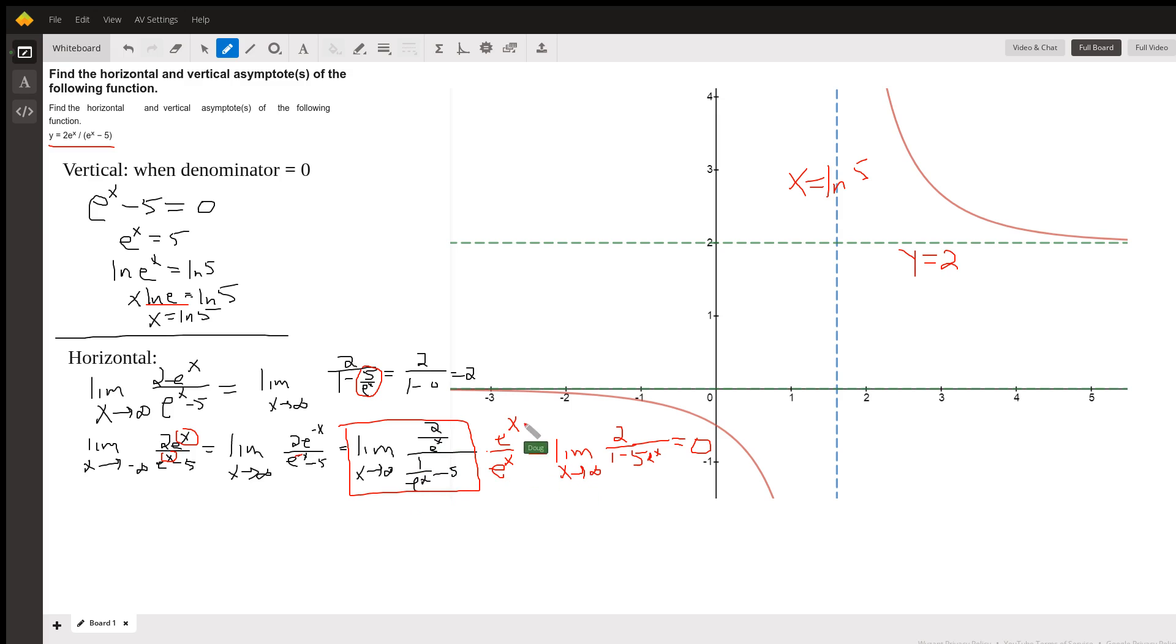If you want to see it a little bit differently, you could simplify this complex fraction by multiplying numerator and denominator by e^x. And the new numerator will become a 2, 1 over e^x would become a 1 minus 5e^x. And then as x gets bigger and bigger,